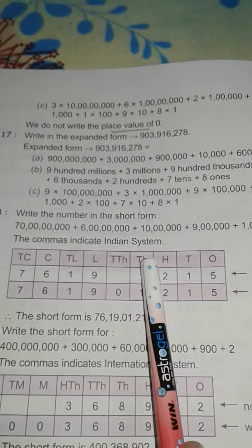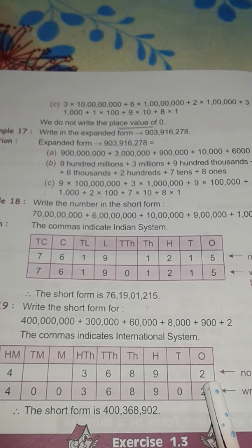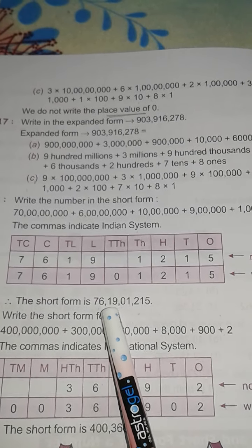First one is given in Indian system, second one is given in international system. So the short form is 76 crore. Why 76 crore?